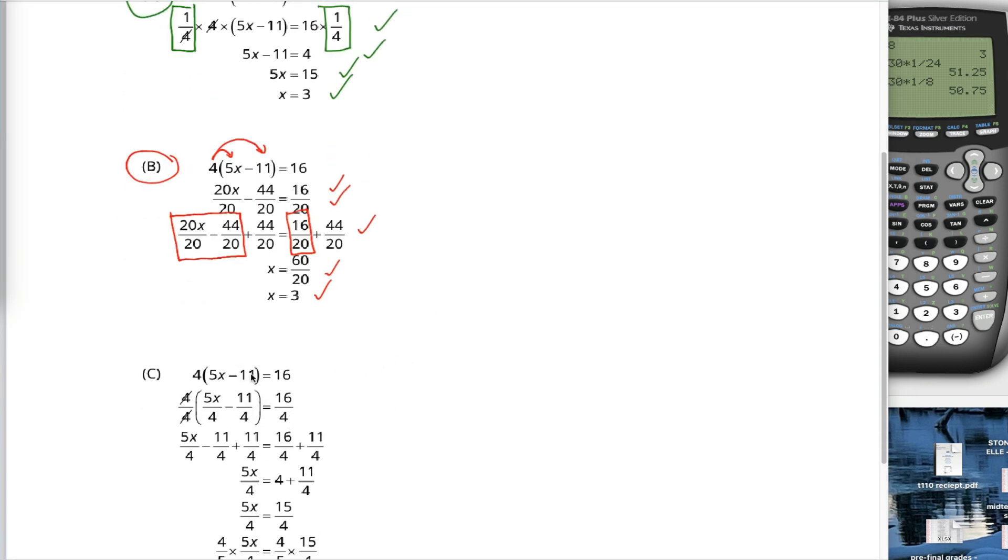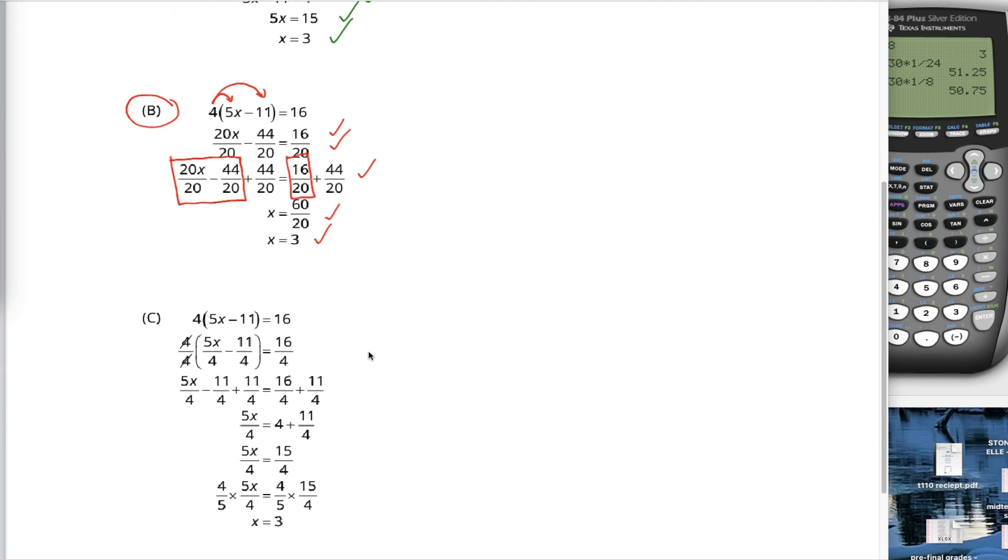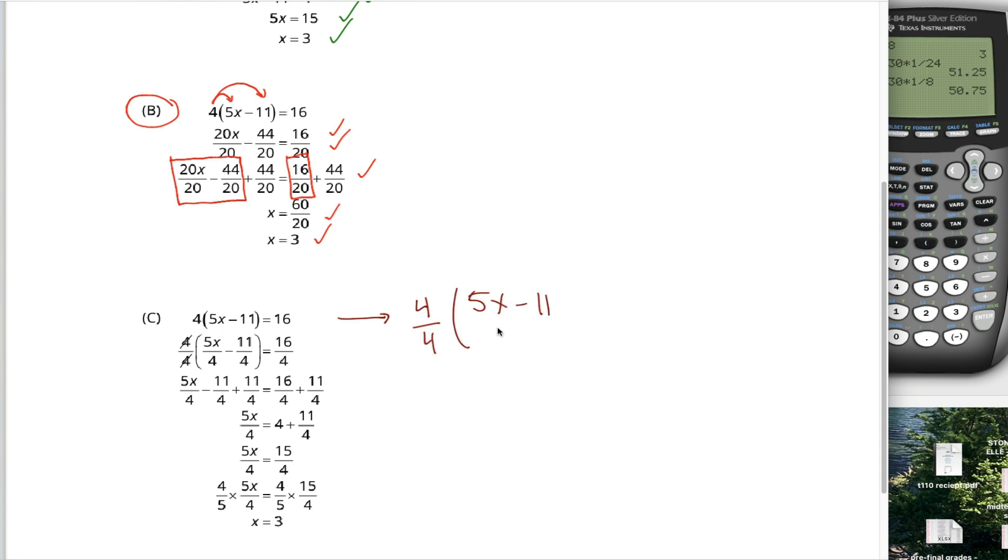Finally, method C. I guess the idea with method C is what the student tried to do is kind of divide both sides of the equation by 4, kind of, sort of, but they divided the 4 on the outside of the parentheses by 4, and they divided the 5x minus 11, the stuff inside the parentheses, by 4. So before you cross out these 4s right here, maybe as an intermediate step, what the student is doing is changing this into 4 over 4 times 5x minus 11 over 4, which you can write as 5x over 4 minus 11 over 4, is equal to 16 over 4. That is wrong. This is all one term on the left side of the equation here. So when you're dividing both sides of the equation by 4, you don't divide the stuff outside the parentheses and the stuff inside the parentheses by 4. You can only do one or the other.